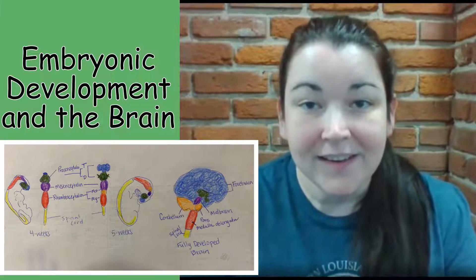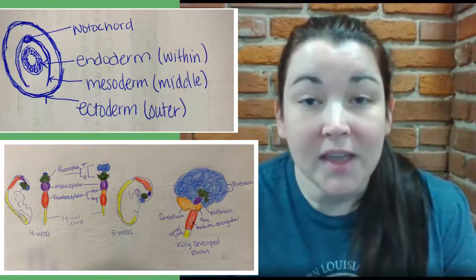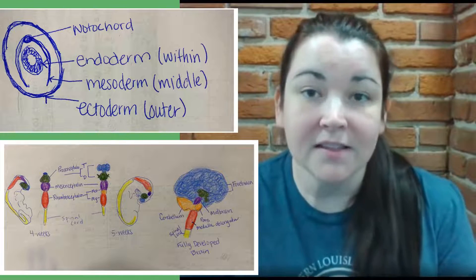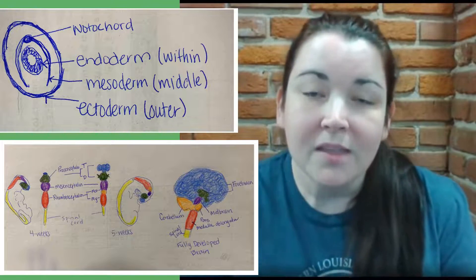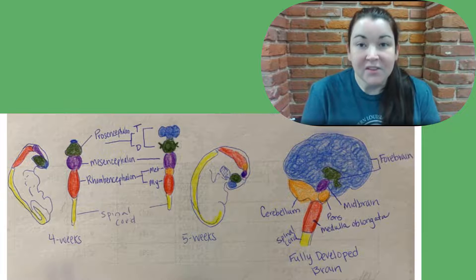Welcome back. Today we're going to go over embryonic development and what portions of the brain arise at different points during that embryonic development. Looking at embryonic development, there are three primary areas. These three primary areas come from the ectoderm, the outer portion of the neural tube. This happens around three to four weeks of embryonic development.